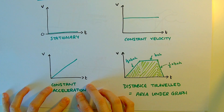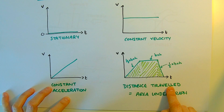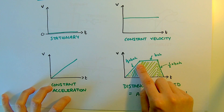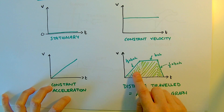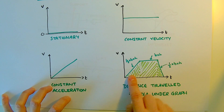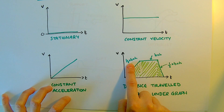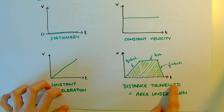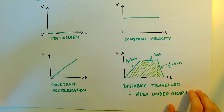One thing you might be asked to do using a velocity-time graph is to find the distance travelled. Some people try to use speed equals distance divided by time — it's not going to work. With a graph, you're looking for the area underneath the graph. Split it up into sections — triangles, squares or rectangles — knowing that a triangle is half times base times height, and a rectangle is base times height. Work out the area under the graph to find the distance travelled.